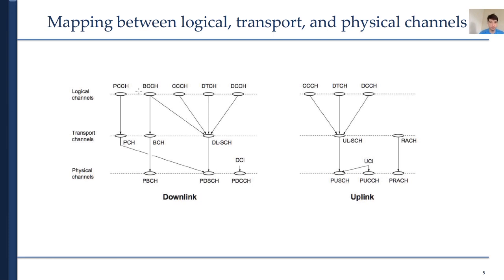The next channel, which is PCCH, is used for paging services of devices whose location on a cell level is not known to the network. The paging message therefore needs to be transmitted in multiple cells. Note that in case of non-standalone operation, paging is provided by the LTE system—there is no PCCH.